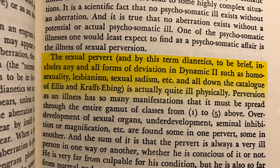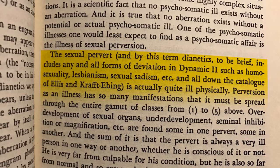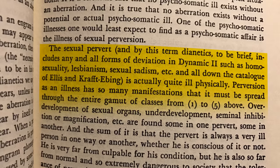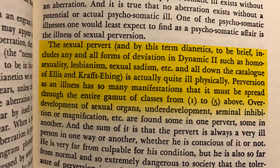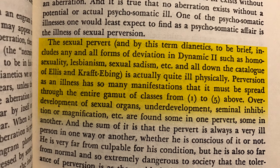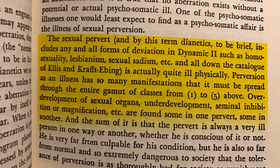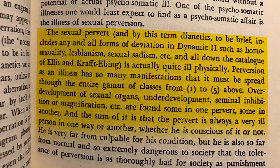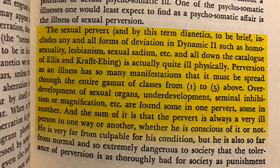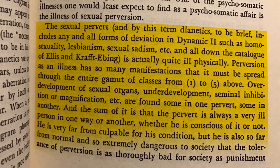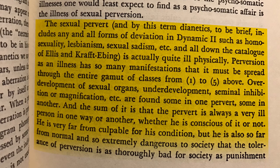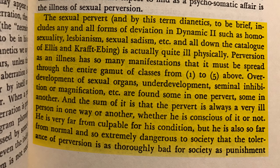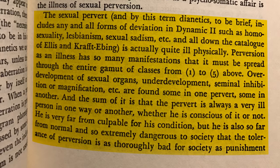'The sexual pervert is actually quite ill physically. Perversion as an illness has so many manifestations that it must be spread through the entire gamut of classes.' Overdevelopment or underdevelopment of sexual organs, seminal inhibition or magnification, etc., are found in some perverts and not others. 'The sum of it is that the pervert is always a very ill person in one way or another, whether he's conscious of it or not. He is very far from culpable for his condition, but he is so far from normal and so extremely dangerous to society.'